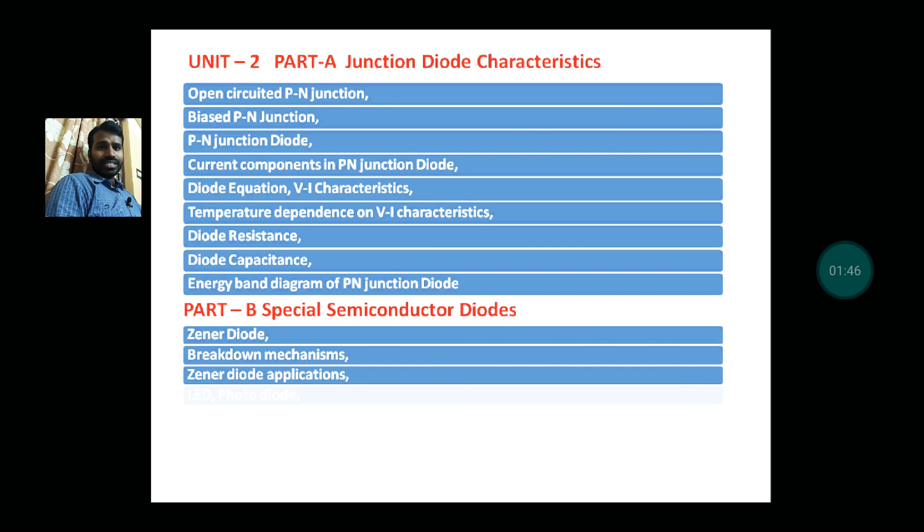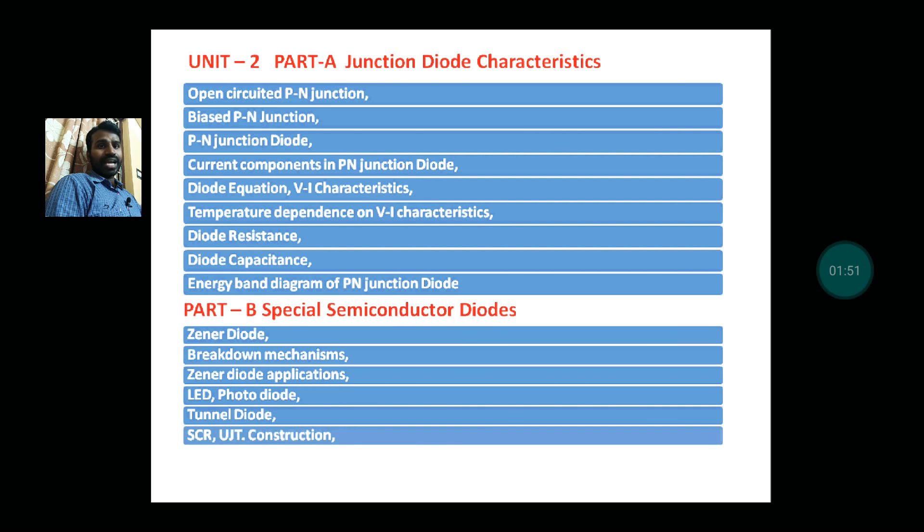LED, photodiode, tunnel diode using energy band diagram, SCR, UJT—construction, operation, and characteristics of all the diodes are required to be considered. The third unit is Rectifiers and Filters. In topics are basic rectifier setup.